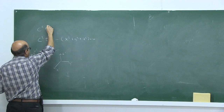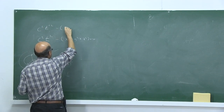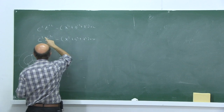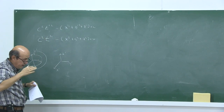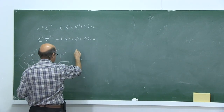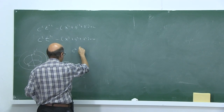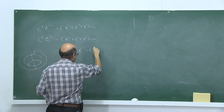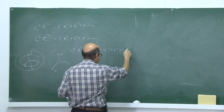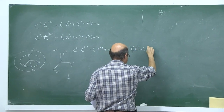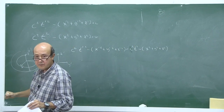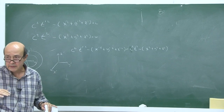So: c²t prime² minus x prime² minus y prime² minus z prime² equals c²t² minus x² minus y² minus z². They have to be the same. If you find the transformations satisfying this rule, those will be the Lorentz transformations. I could write the Lorentz transformations directly, but in order to feel and remember what you did in the undergraduate course, I will quickly try to derive them using geometry.